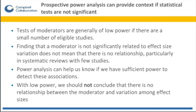Tests of moderators are generally of low power if there is a small number of eligible studies. We also have to remember that finding a moderator is not significantly related to effect size variation does not mean that there is no relationship, particularly when we have few studies. Power analysis can help us know if we have sufficient power to detect associations between moderators and variance across effect sizes. With low power, we should not conclude that there is no relationship between a moderator and variation among effect sizes — we may simply need more evidence.